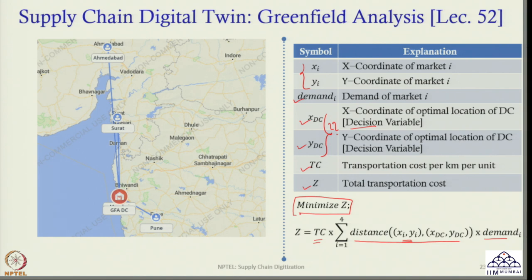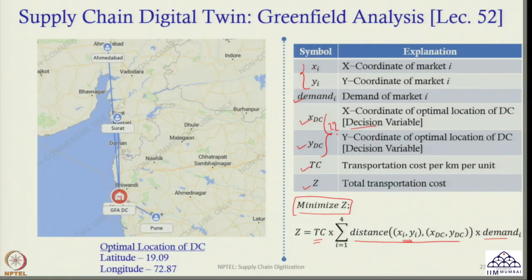In the last class, we showed you the Excel Solver output and the output of the logistics model. The output says that the distribution center should be located at optimal latitude 19.09 and optimal longitude 72.87. In today's session we will try to reproduce this result using Excel Solver as well as using any logistics software.